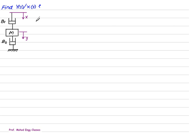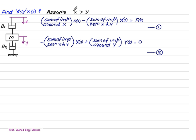Consider another example in which we want to find y(s)/x(s). This is a simple system with a mass m connected by dampers b1 and b2. In this figure, no applied force is given, so we assume a force is applied at x, meaning x is greater than y. Since x(s) is greater than y(s), our first variable is x(s) and the second is y(s), equal to f(s). The second equation gives -bs·x(s) plus (bs)·y(s) equals zero.